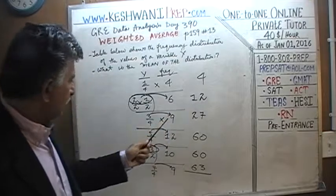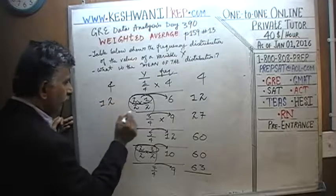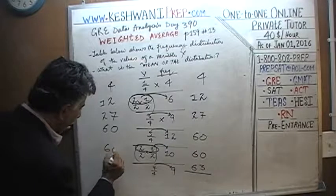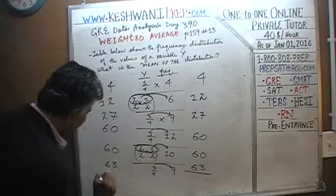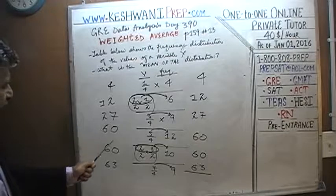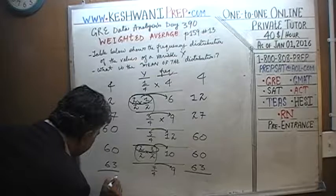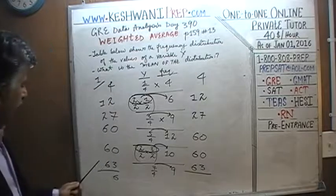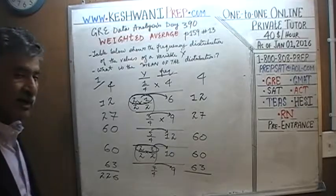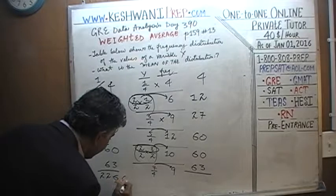Let's find out how many quarters we have in total. We add: four plus twelve plus twenty-seven plus sixty plus sixty plus sixty-three. That gives us two hundred and twenty-six quarters. Don't put a dollar sign — these are not dollar amounts, these are quarters. We collected two hundred and twenty-six quarters.